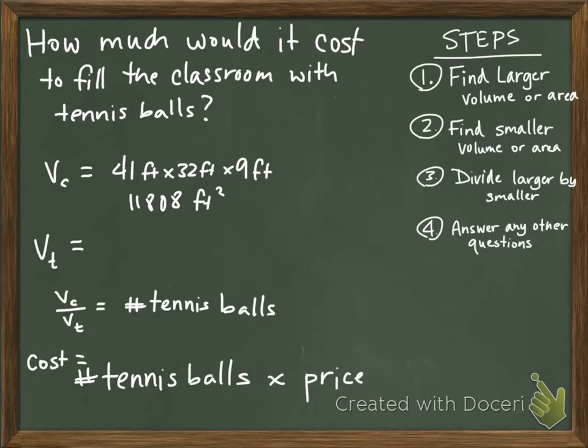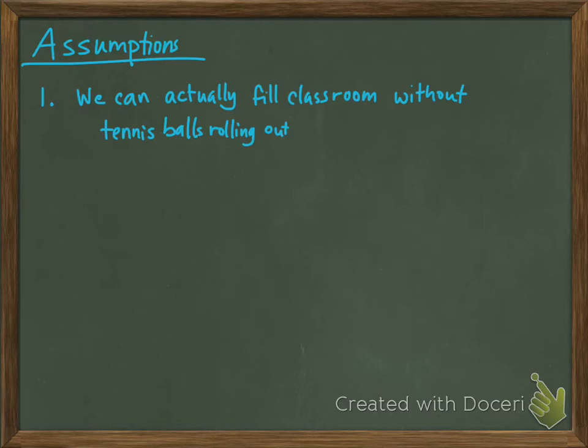So notice that there are several things wrong with this. Number one, our volume of our tennis ball is going to be in inches because they're small. So we're going to have to convert. So let me make a note. You're going to need to make these the same unit. The other thing that you're going to have to do is you're going to have to list out all your assumptions because we're assuming a lot with this problem.